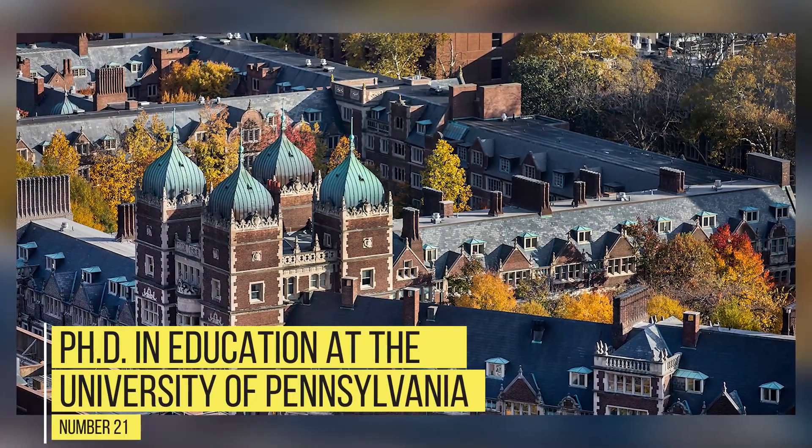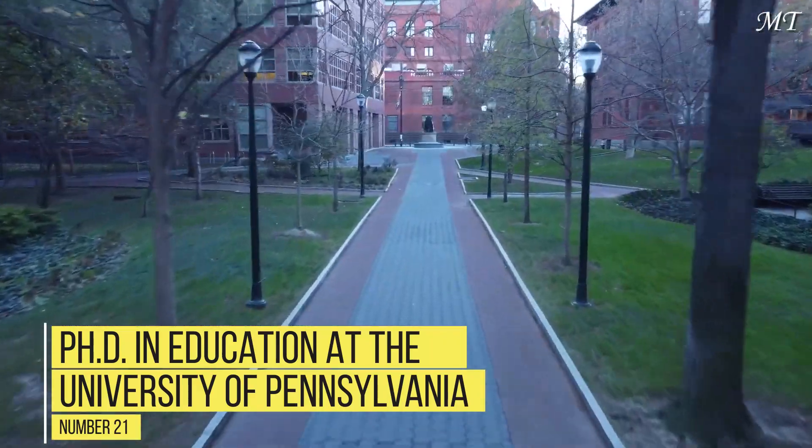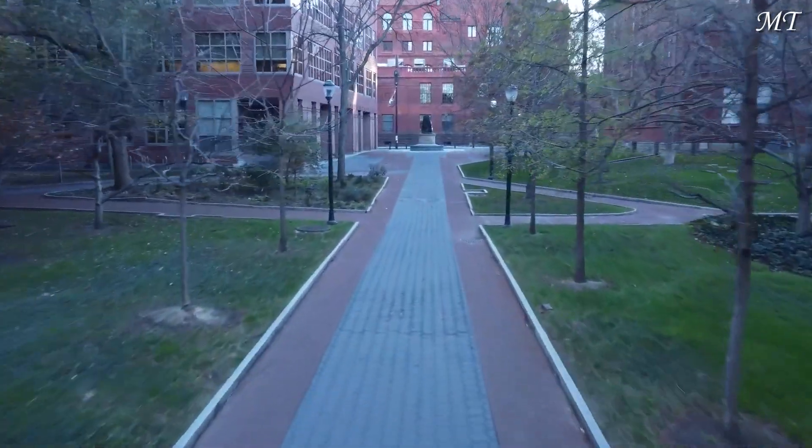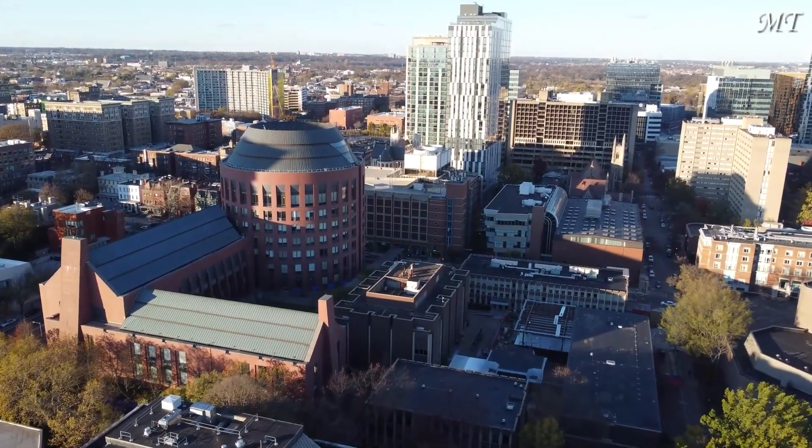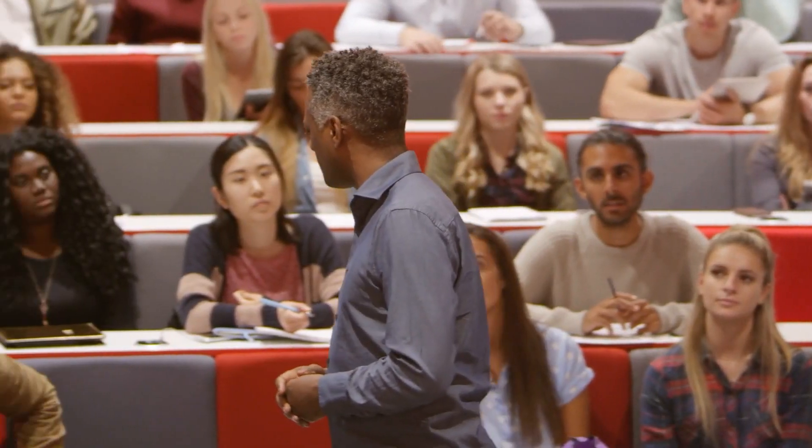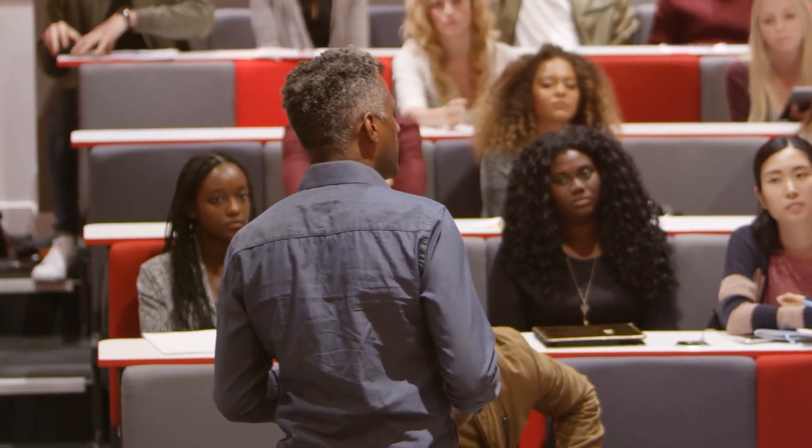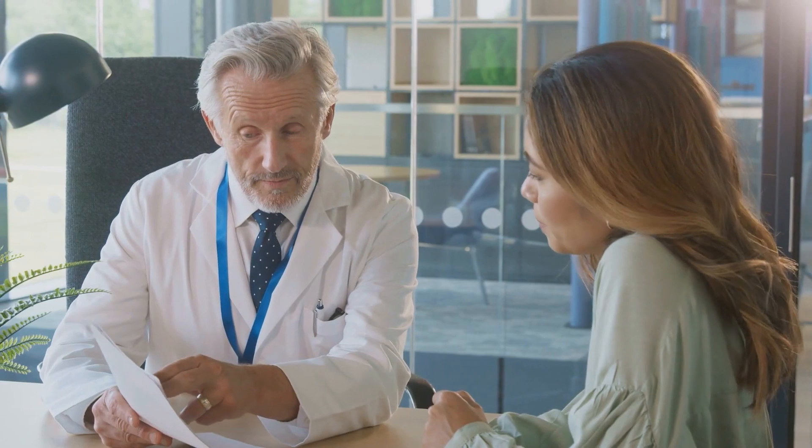Number 21: PhD in Education at the University of Pennsylvania. The fully funded PhD programs in the USA cover various programs such as studentships, scholarships, and grant and bursaries programs. All PhD students are guaranteed a full scholarship for their first four years of study, as well as a stipend in student health insurance.